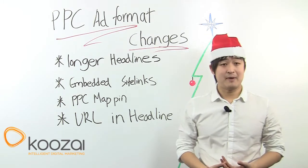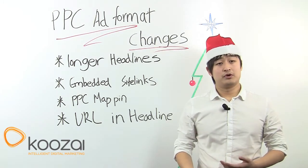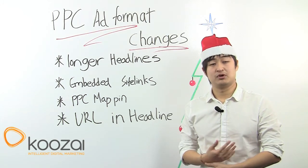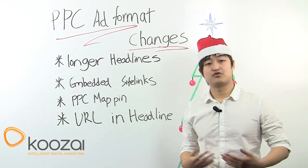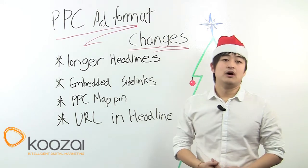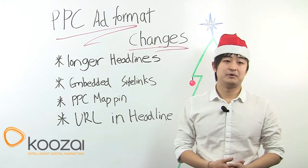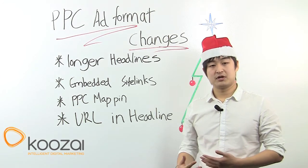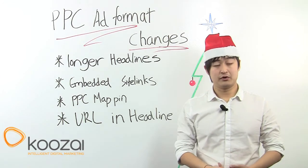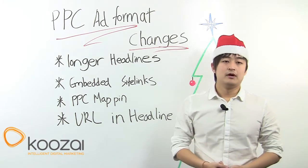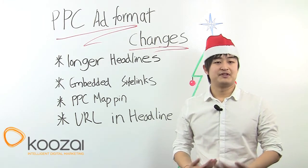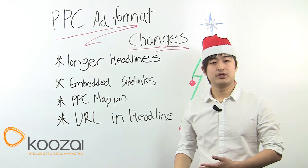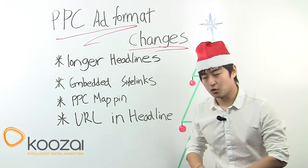Next one up is PPC map pin — another improvement to an old site extension. Before, your location extensions in a PPC ad would only show your business address, phone number, etc. Now you also get a pin on the minimap in the left-hand side of Google SERPs. To differentiate between organic results, your pin will be blue and organic results will have red pins. Make sure you enable all the AdWords ad extensions and take full advantage of this. Check out my tutorial on Koozai.com for detailed guides on all the extensions.